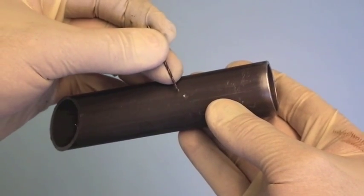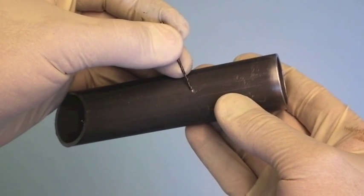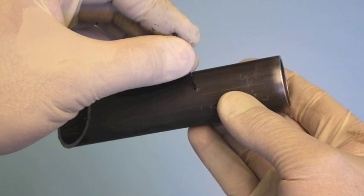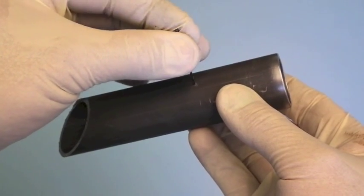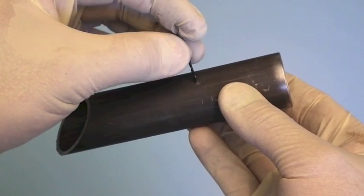Now the dot punch mark you ended up with shouldn't be too big. It should be big enough for the tip of the drill to sit in to keep it in line when you start to drill the hole.